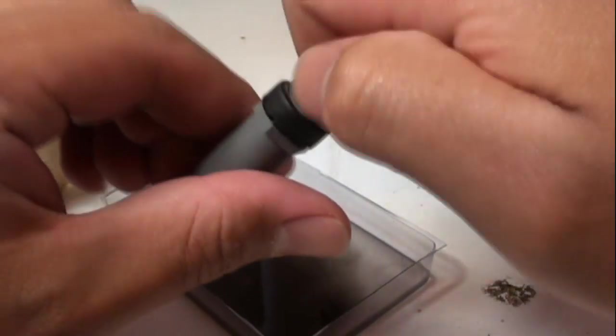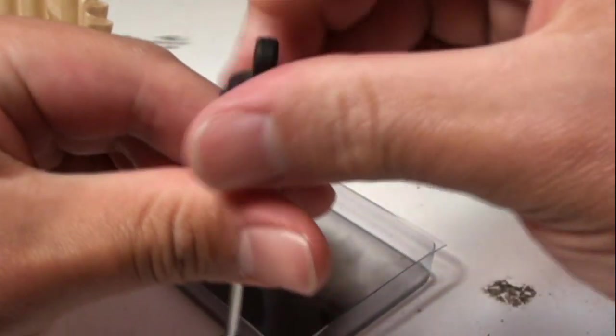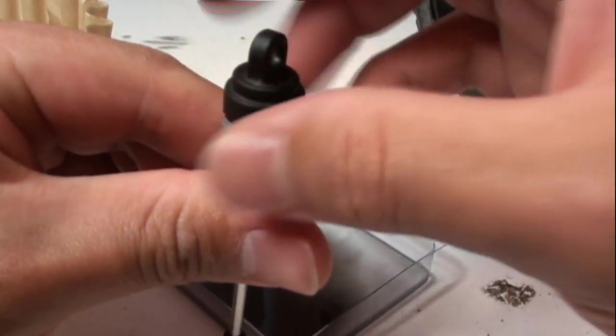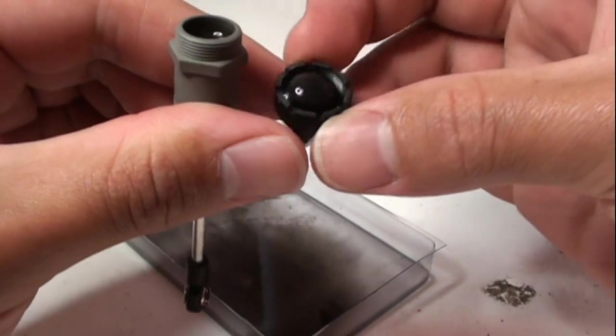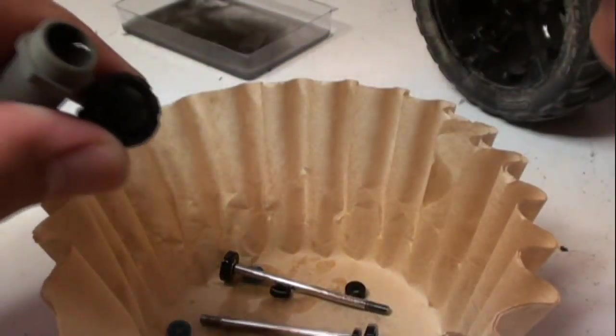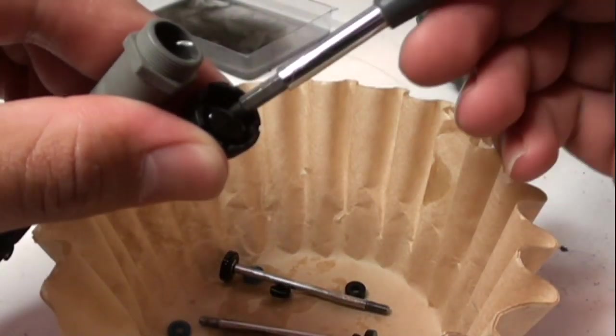Step one, remove the shock cap cover. Should easily just screw off. Now as you can see, there is a rubber seal in there. We need to get that out. So I'll go ahead and pop that off.